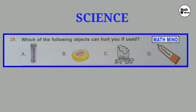Question number 29: Which of the following objects can hurt you if used? Option A: Talcum powder. Option B: Soap. Option C: Broken glass. Option D: Toothpaste. Clearly correct option is C: Broken glass.